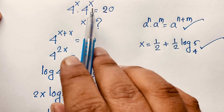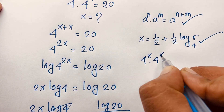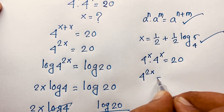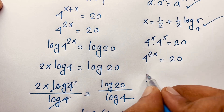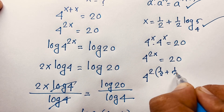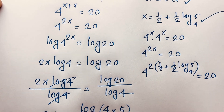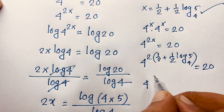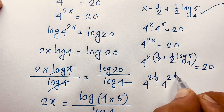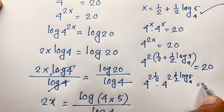Let's check this. Our question is 4 to the power x times 4 to the power x is equal to 20, which means 4 to the power 2x is equal to 20. We substitute x equal to 1 over 2 plus 1 over 2 log 5 base 4, giving us 4 to the power 2 times that value.